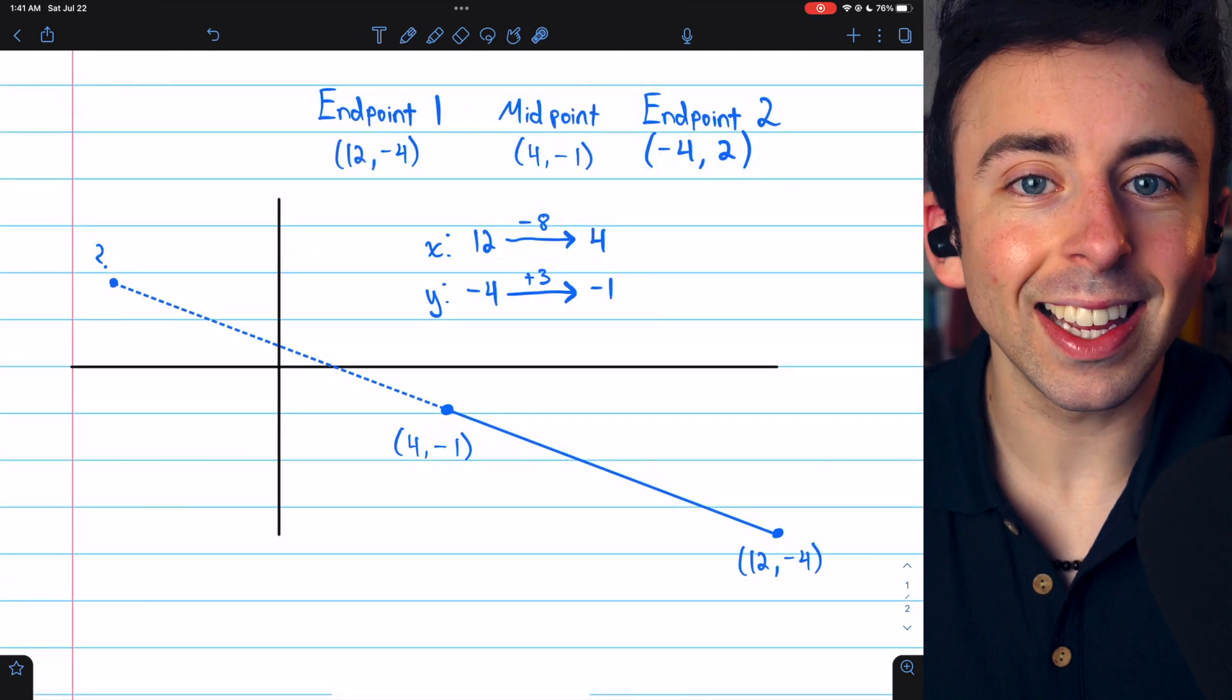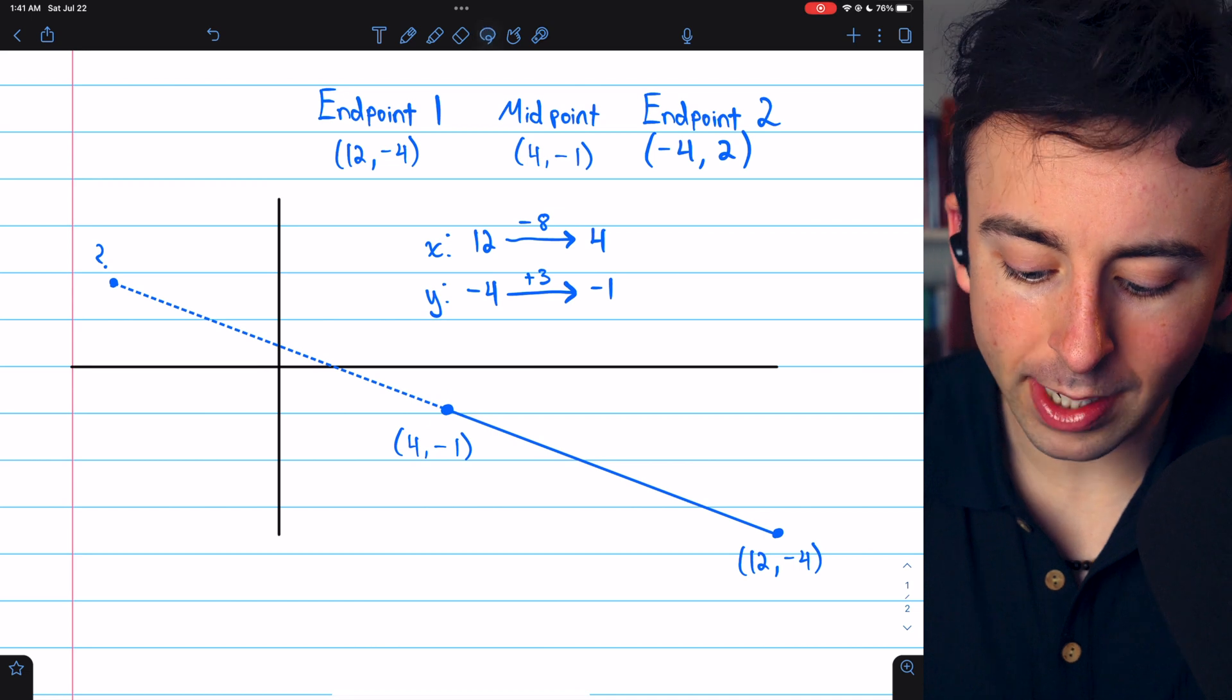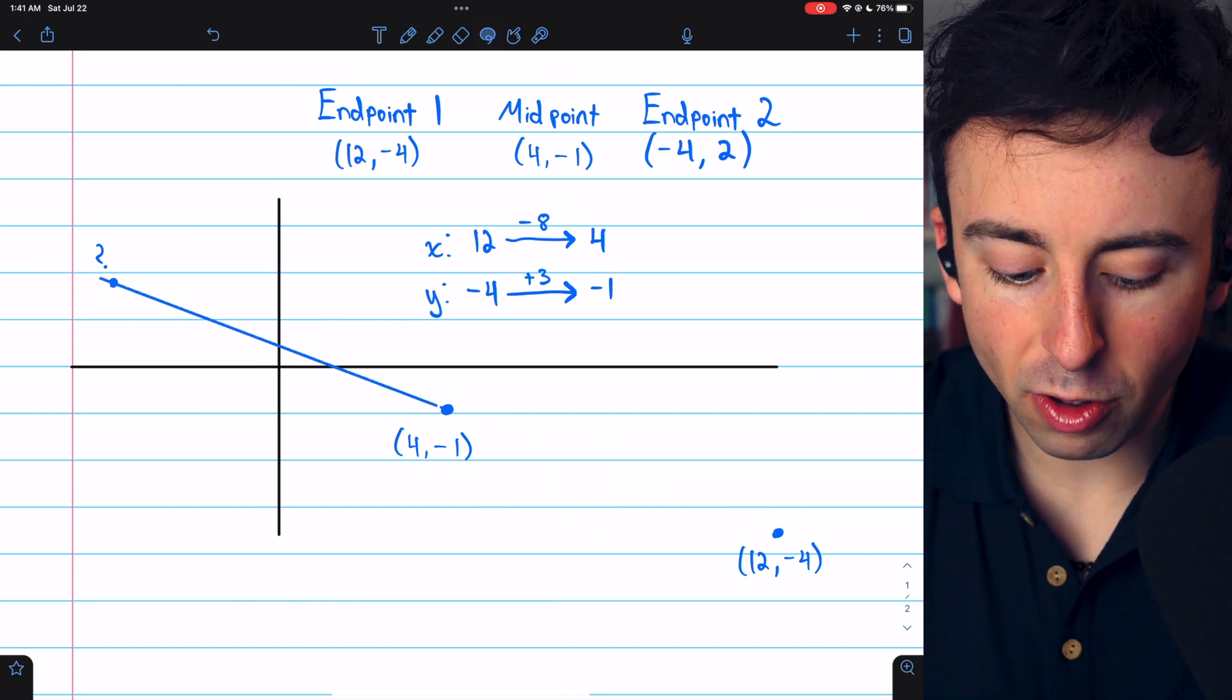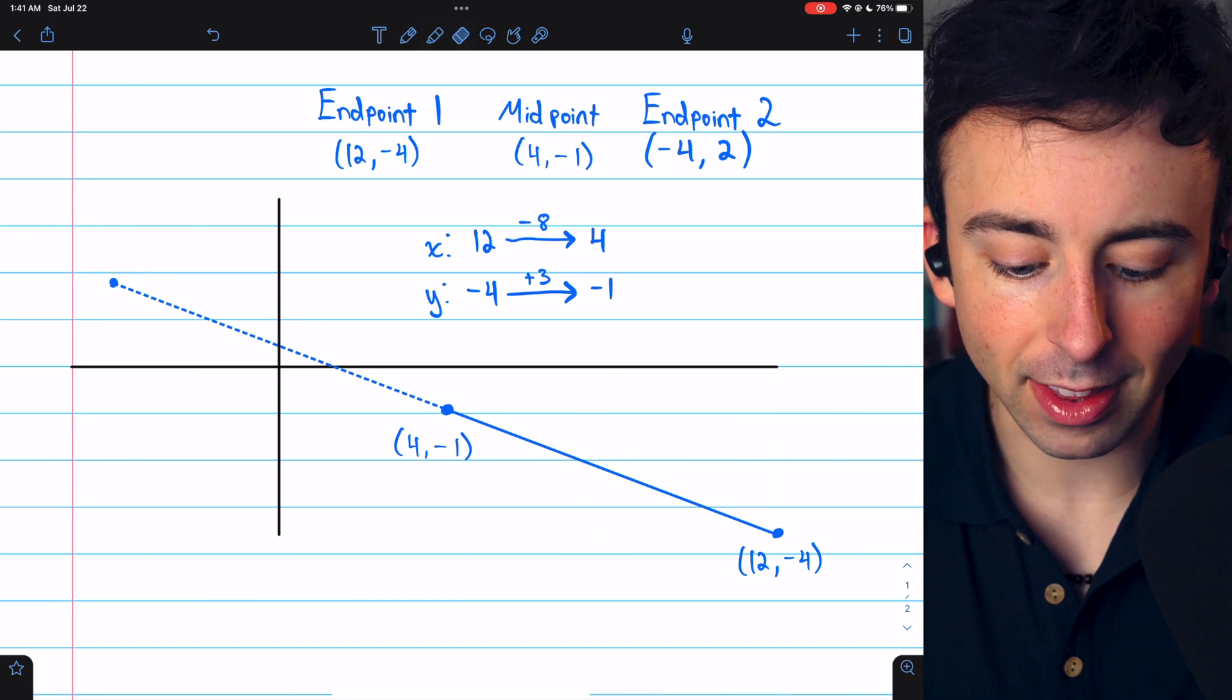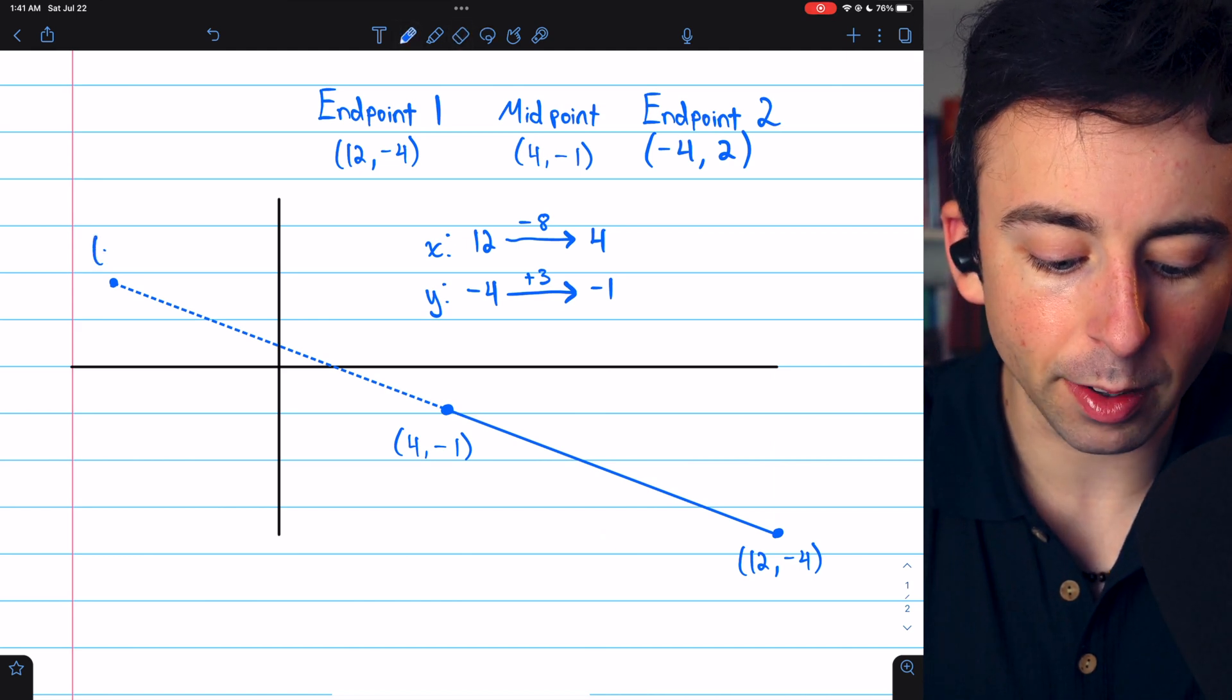And this is what it looks like as a picture. We were given this endpoint and this midpoint, and we just duplicated the change between them to get to that missing endpoint. In this case, the missing endpoint was (-4, 2).